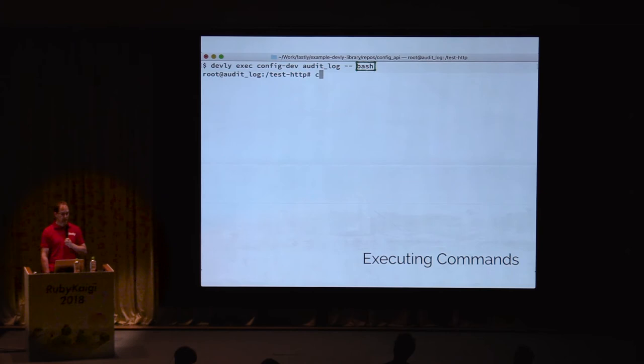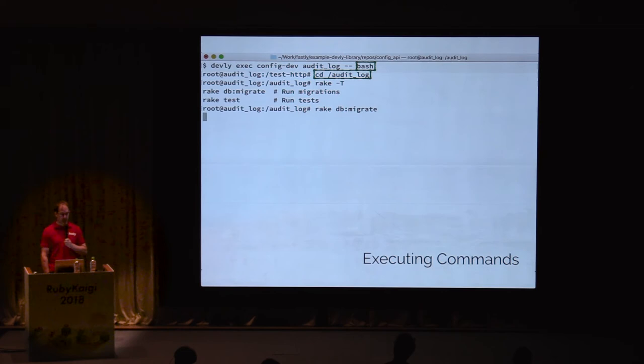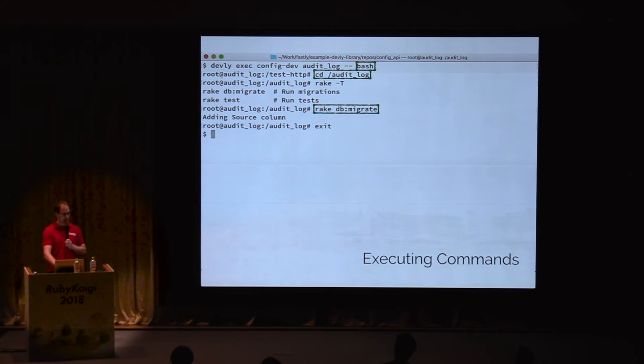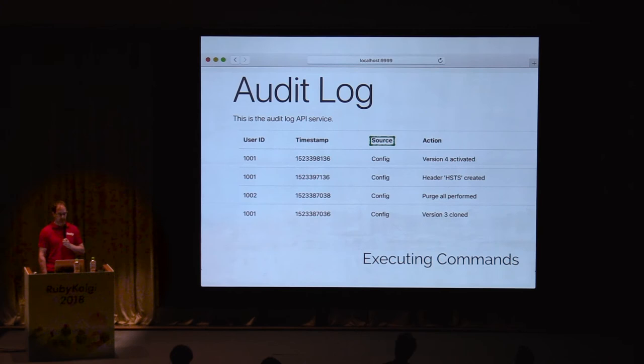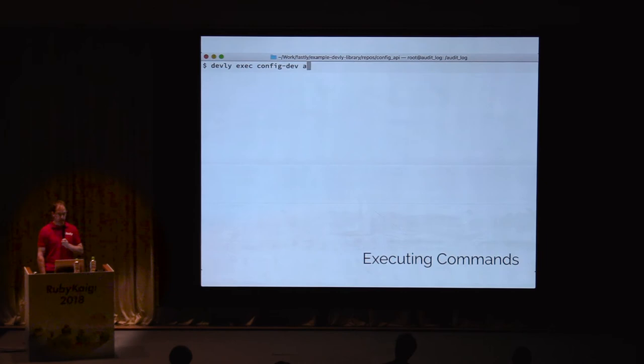We start a bash shell so we can explore. After the shell is open, we change to the audit log source directory, then check to make sure we're in the right place by running rake capital T, then run the migrations. We can see that the migration added the source column. Going back to the browser and reloading the page shows the source column migration is complete. We then switch back to the terminal and run migrations using devly exec with a complete rake command line.